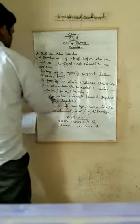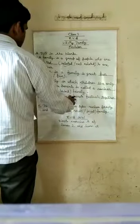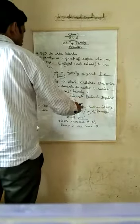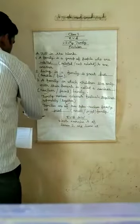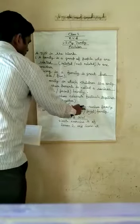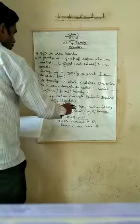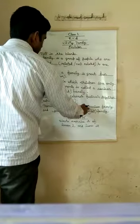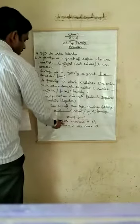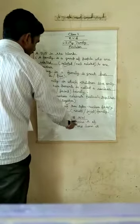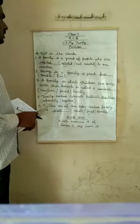family members celebrate festivals together. Parivar ke sadasya ek saath utsav manate hain. Fifth, families are of two types, nuclear family and joint family. Parivar do tarah ke hote hain, kendriya parivar aur sanyukt parivar. EVS homework, write exercises of lesson two and learning. Isko aap write karenge aur learn karenge.